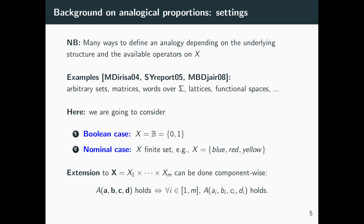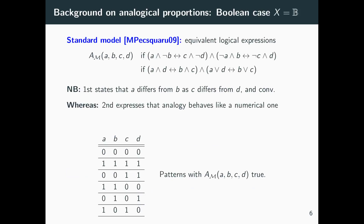In the nominal case, the set X contains elements such as colors — for instance, a three-element set. We also consider analogies defined over the Cartesian product: if we have a model of analogy for each component, then four tuples A, B, C, D are said to be in analogy if each one of the components of these four tuples is also in analogy.